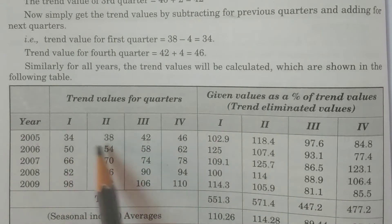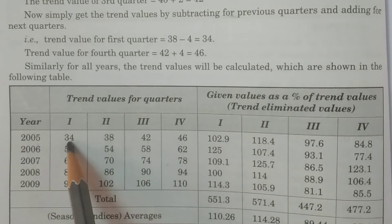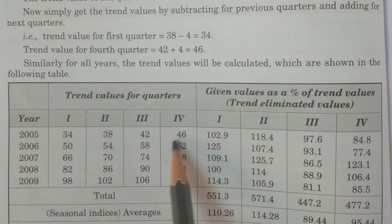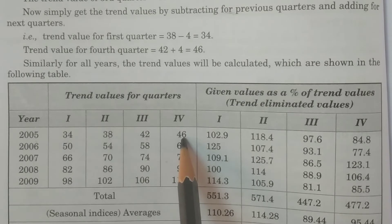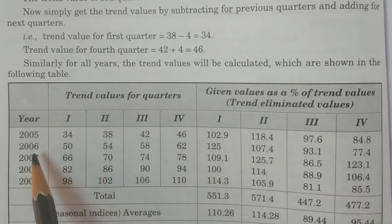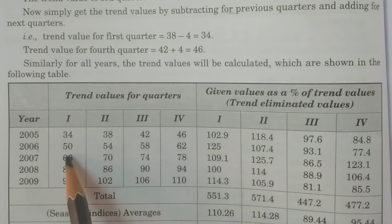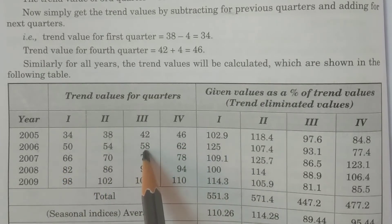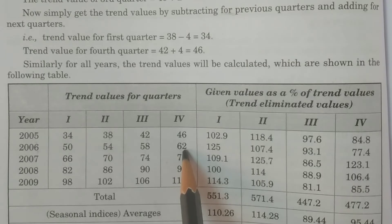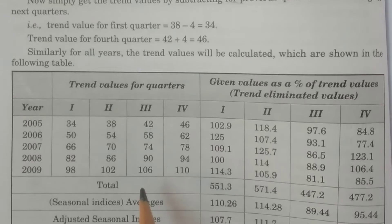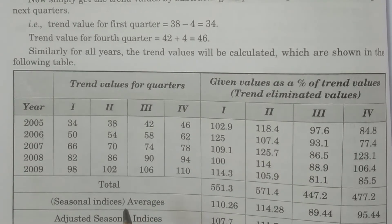For the first quarter: 38 minus 4 equals 34. For the fourth quarter: 42 plus 4 equals 46. Then continuing — 46 plus 4 equals 50, 50 plus 4 equals 54, 54 plus 4 equals 58, and so on. Adding 4 each time gives you all the quarterly trend values. This is the procedure of obtaining trend values from the yearly increment.